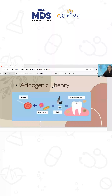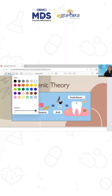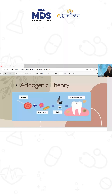Hello friends. Let's learn about the most important theory of dental caries — the acidogenic theory. This acidogenic theory is also called the chemico-parasitic theory. It was first proposed by Miller.